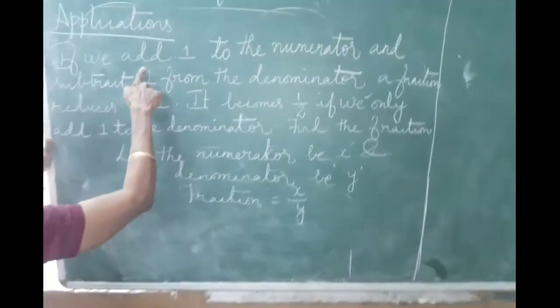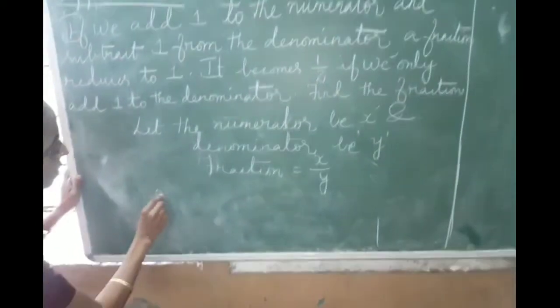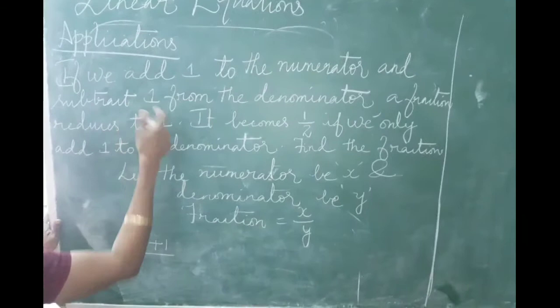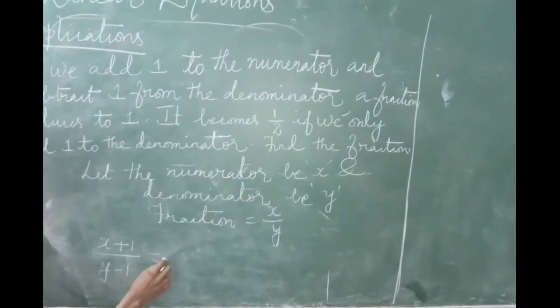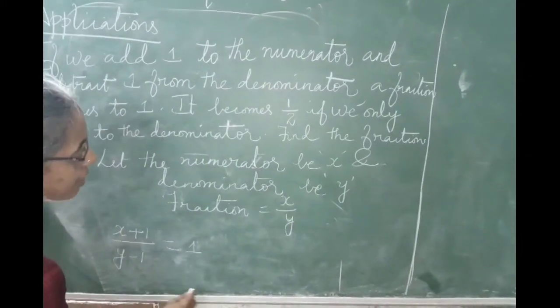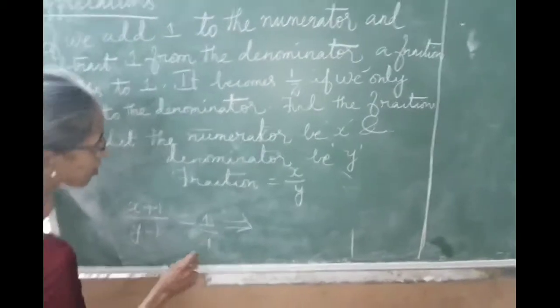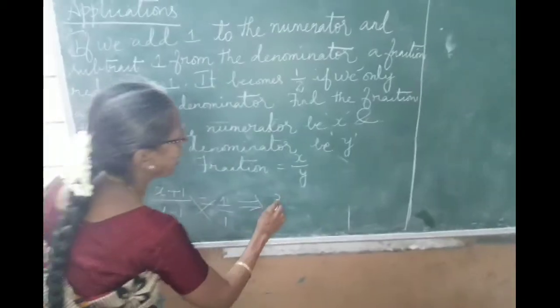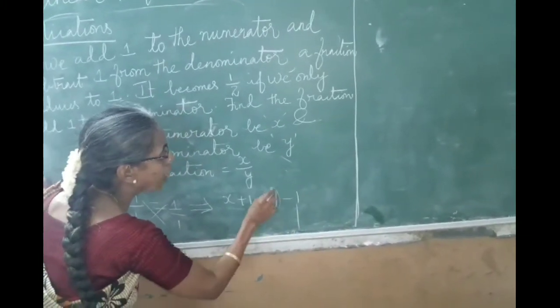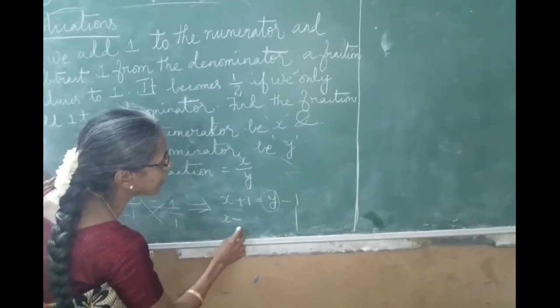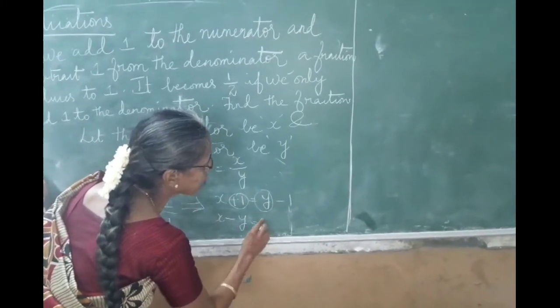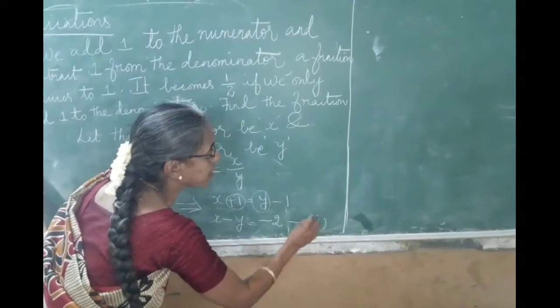So here what is the condition given? If you add 1 to the numerator, so x plus 1, and subtract 1 from the denominator, y minus 1, the fraction reduces to 1. So this is your first condition given. On simplifying this one, x plus 1 equal to y minus 1, or when you bring this variable here, x minus y will be equal to minus 2. This is your first equation.